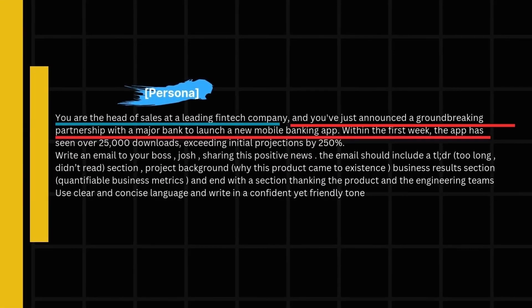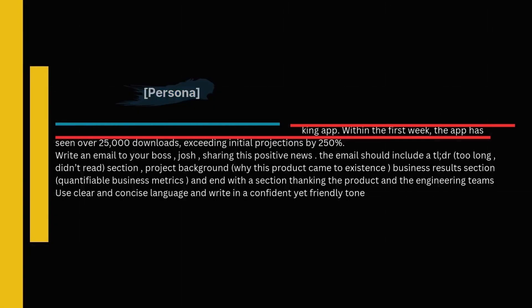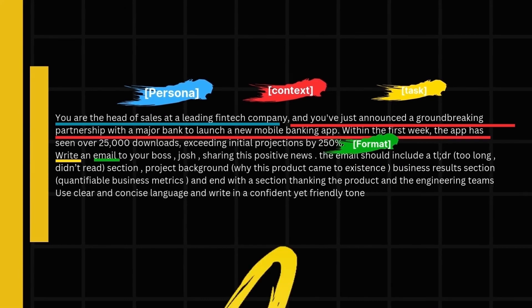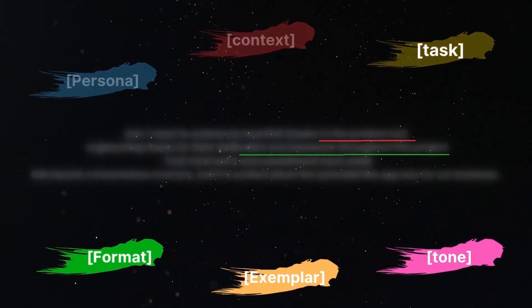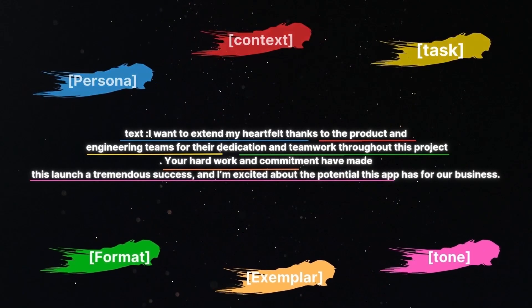Now here's a full prompt example putting it all together: 'You are the head of sales at a leading fintech company and you just announced a groundbreaking partnership with a major bank to launch a new mobile banking app. Within the first week the app has seen over 25,000 downloads, exceeding initial projections by 250%. Write an email to your boss Josh sharing the positive news. This email should include a TLDR section, project background, business results, and end with a section thanking the product and engineering team. Use clear and concise language, written in a confident yet friendly tone.' Watch the amazing output of this prompt.